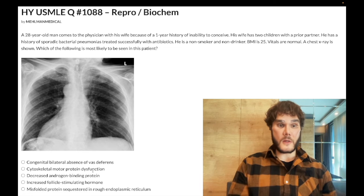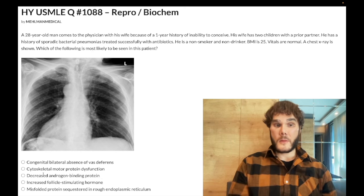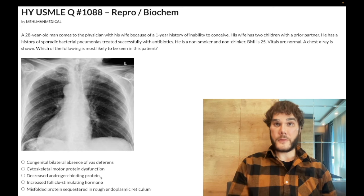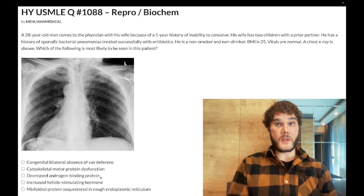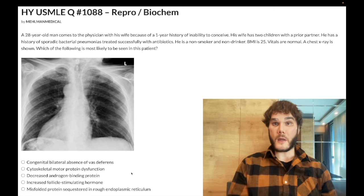Answer choice C — decreased androgen binding protein — wrong answer. This is miscellaneous and could refer to conditions with primary hypogonadism, like Klinefelter syndrome. Androgen binding protein is secreted by Sertoli cells, so you get dysgenesis of the seminiferous tubules in Klinefelter. In general, if you had infertility with primary hypogonadism, choice C could be a potential answer — but in this case it's wrong.